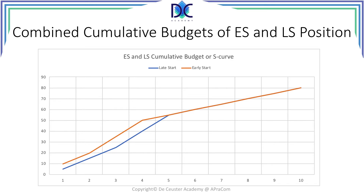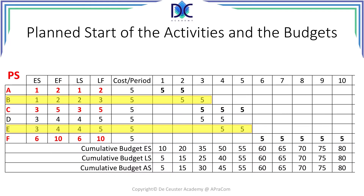This is the early start and late start position. Now we still have to go a step further — let's look at what happened after smoothing and what it did to the Gantt chart. This is the planned start (PS) position. We see that B was moved to the late start position — shown in yellow — D was not changed, and E was also moved to the late start position.